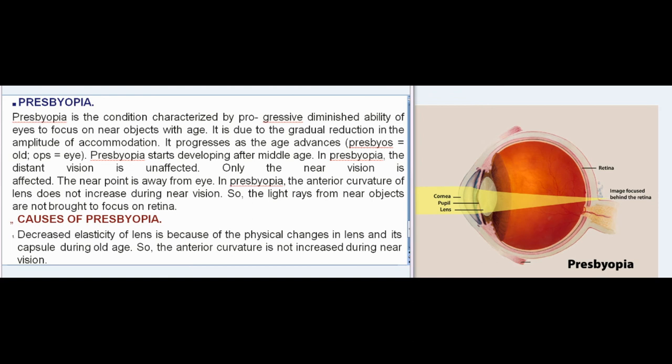Presbyopia: Presbyopia is the condition characterized by a progressively diminished ability of the eyes to focus on near objects with age. It is due to the gradual reduction in the amplitude of accommodation and progresses as age advances. (Presbyos = old; ops = eye.) Presbyopia starts developing after middle age. In presbyopia, distant vision is unaffected; only near vision is affected. The near point is further away from the eye. The anterior curvature of the lens does not increase during near vision, so light rays from near objects are not brought to focus on the retina.